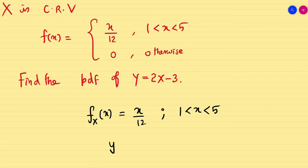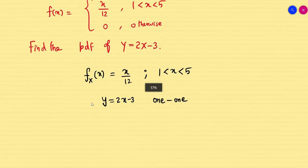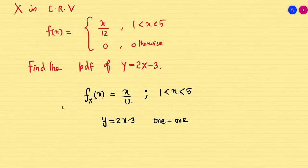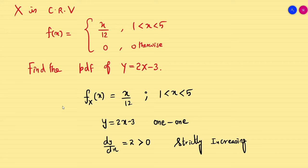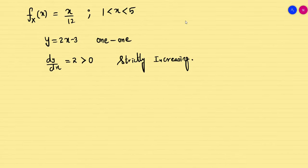It is very obvious that y = 2x - 3 is one-to-one. When we compute dy/dx, we get a positive number, so it is strictly increasing. Since the function is one-to-one and strictly increasing, we can apply the function of a random variable method.